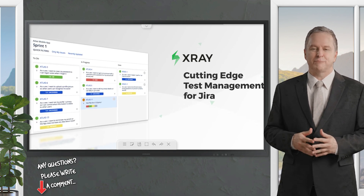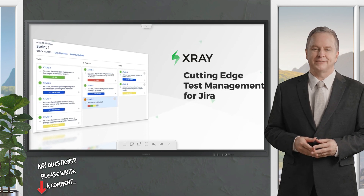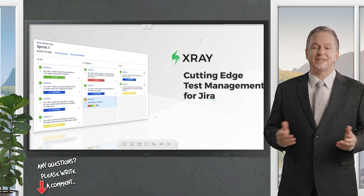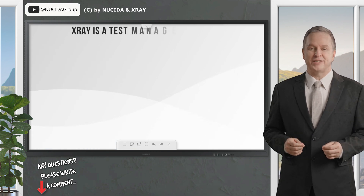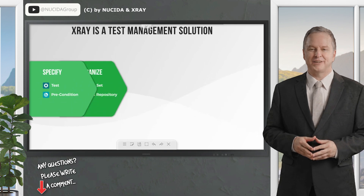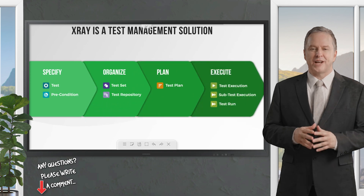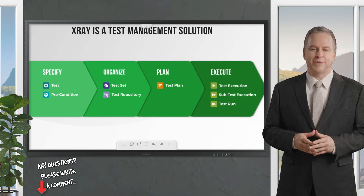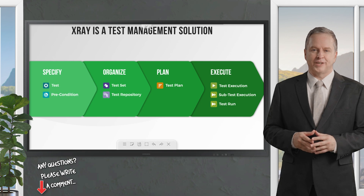It's never been easier to manage tests at scale than with X-ray Test Management. X-ray is a Jira-native software test management app that ensures your testing and development teams are collaborating to achieve the highest quality products — you'll never deliver broken or untested code again. X-ray uses Jira-native issue types to specify, organize, plan, and execute tests.